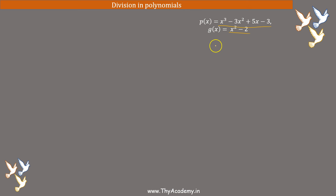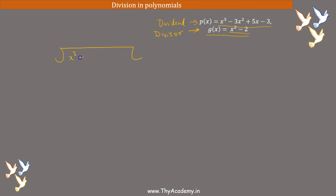So how do we do polynomial division? Like if we have polynomial g(x), let's say p(x) is my dividend — meaning I have to divide p(x) by g(x). So p(x) becomes dividend and g(x) becomes divisor. So let's write it: x³ - 3x² + 5x - 3 divided by x² - 2.